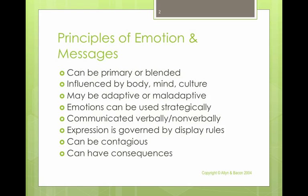Emotions can be communicated verbally — telling someone you're angry — or non-verbally, such as folding your arms across your chest, looking away, looking down, or huffing and puffing. Sometimes we only communicate emotions non-verbally, just to see if people can guess what we're feeling, which is always a dangerous thing to do.